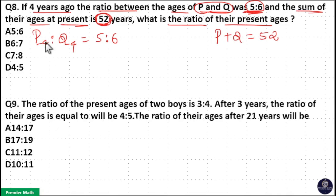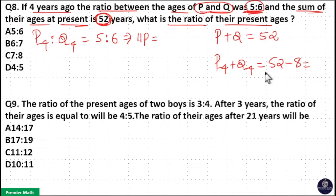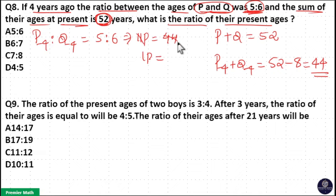4 years ago their sum was 11 parts. We need to find what 1 part equals. Since the present age sum is 52, taking P minus 4 plus Q minus 4, we subtract 8 years from the present sum. So 52 minus 8 is 44 years — meaning 4 years ago P and Q's sum was 44 years. So 11 parts equals 44 years, which means 1 part equals 4 years.